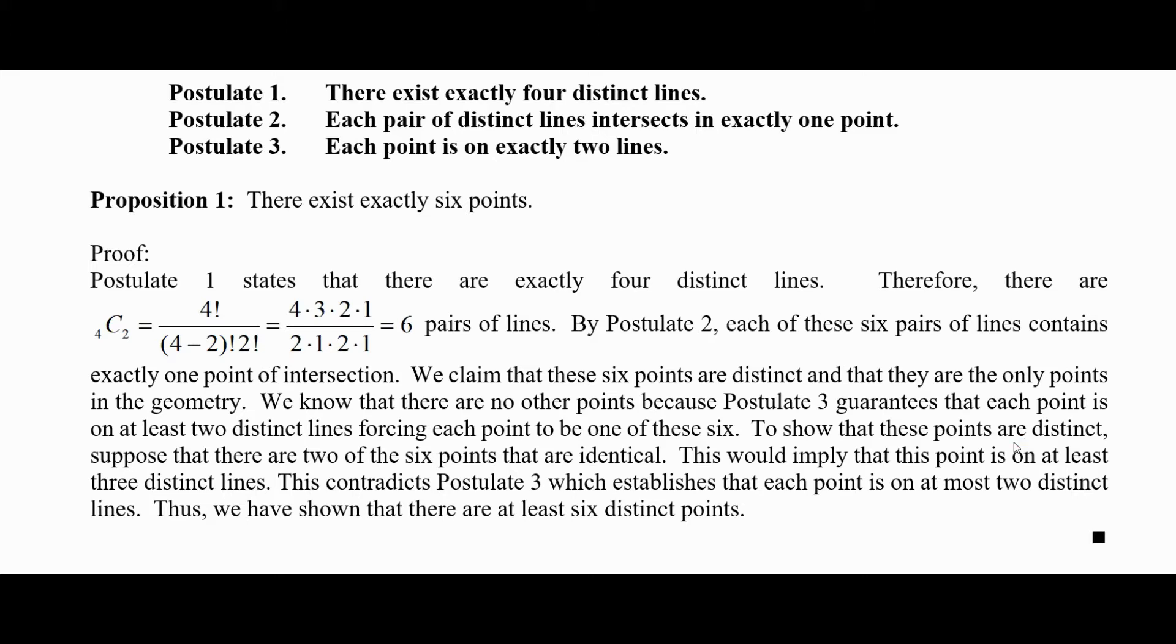So this is six points. Now we need to show that they're distinct and they're the only ones. So this construct gives us potentially six points. We need to make sure that those six points are all different from each other. That's what's meant by distinct. And that they are the only points in the geometry. There's not some other point. Alright, so we know there are no other points because postulate three guarantees that each point is on at least two distinct lines, forcing each point to be one of these six.